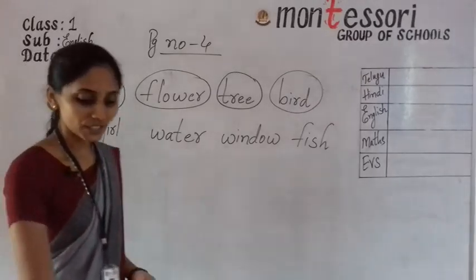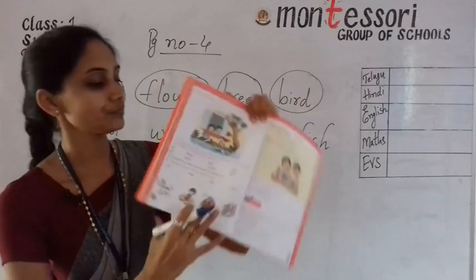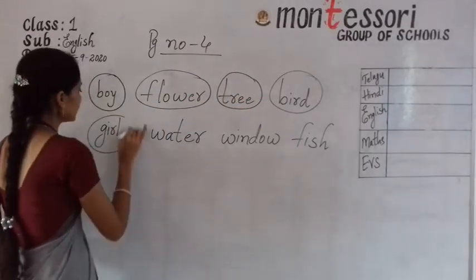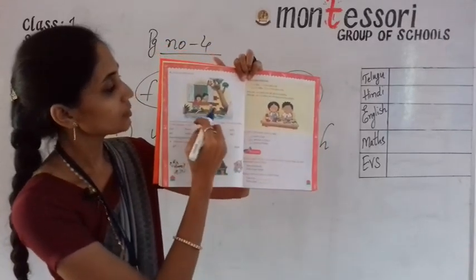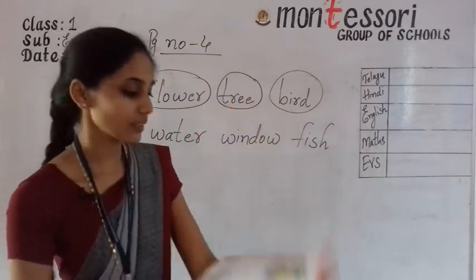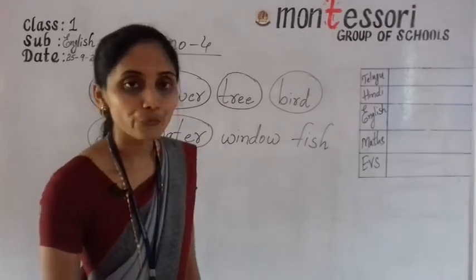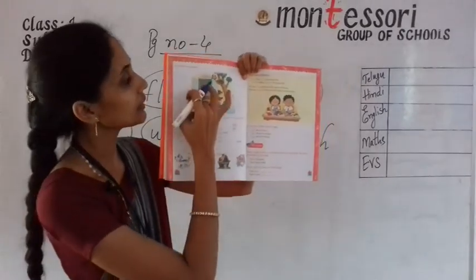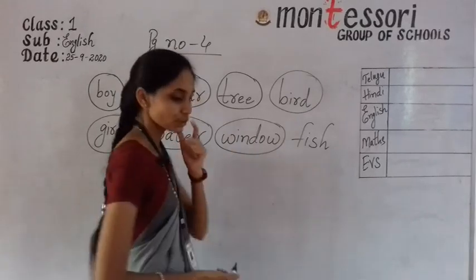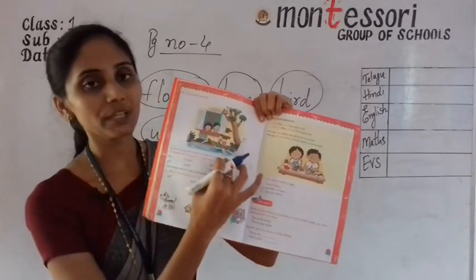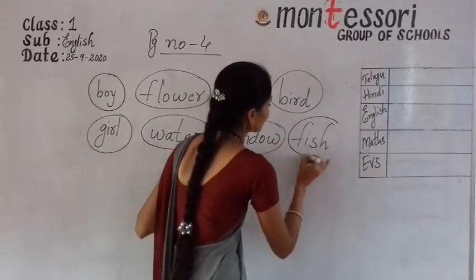Next one is girl, G-I-R-L. Where is the girl? She is inside the window. Circle the word girl. Next one is water. Can you see the water? Here is full of water — fishes are jumping out of that water. Circle the word water. Next, window. Can you see the window? This is the window. Circle the word window. Next one is fish. The fish is jumping out of water. Circle the word fish.